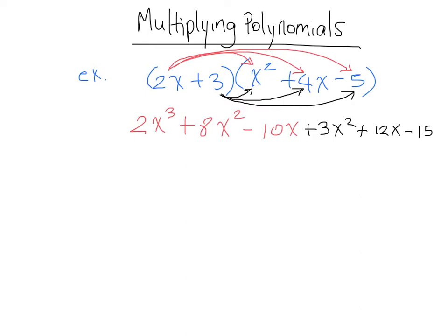So now it's time to join all like terms. So everything with an x cubed, I'm going to give a little blue check. And there's only one thing with an x cubed, so we can just rewrite that as 2x to the third. There are no other like terms there.